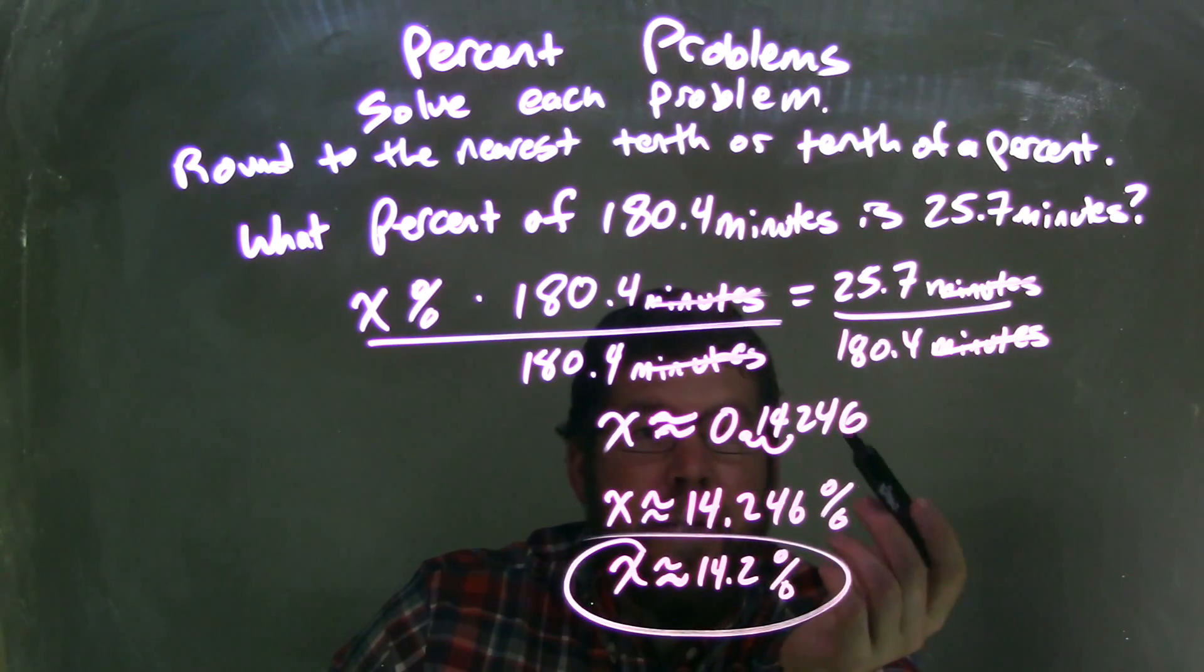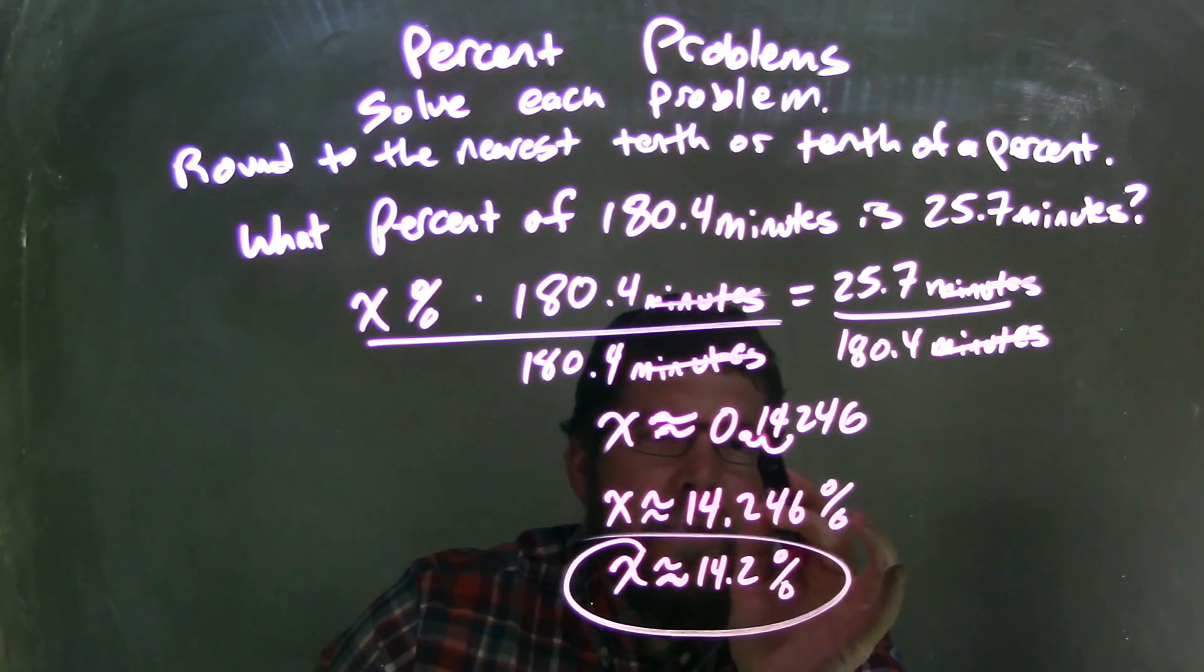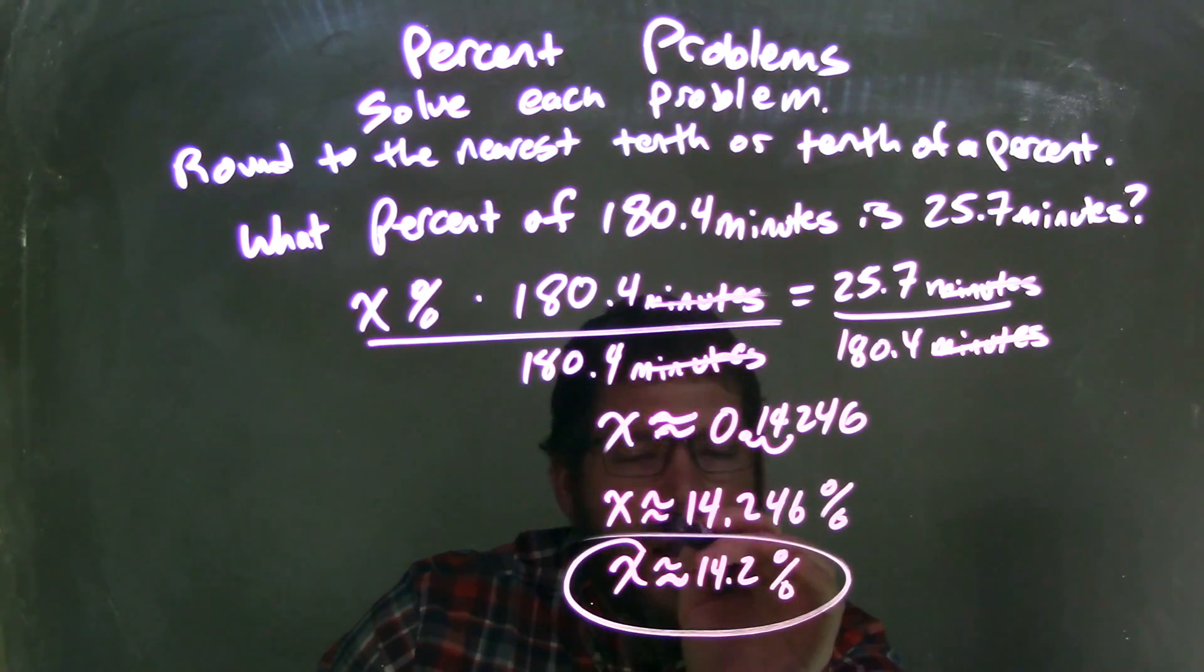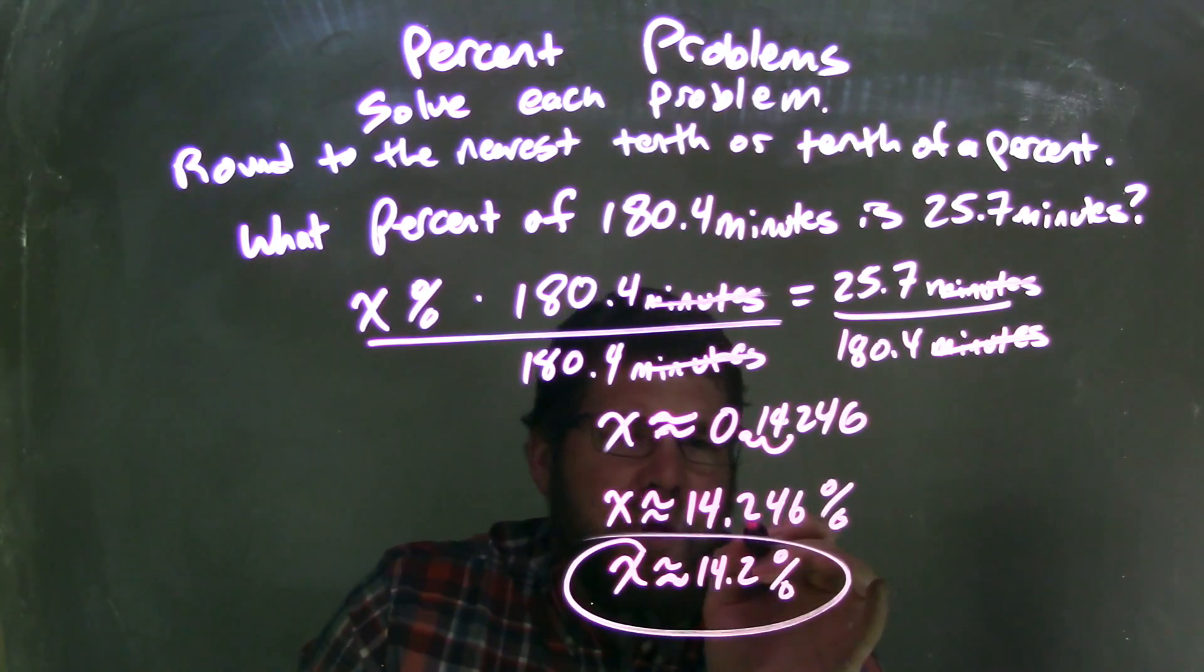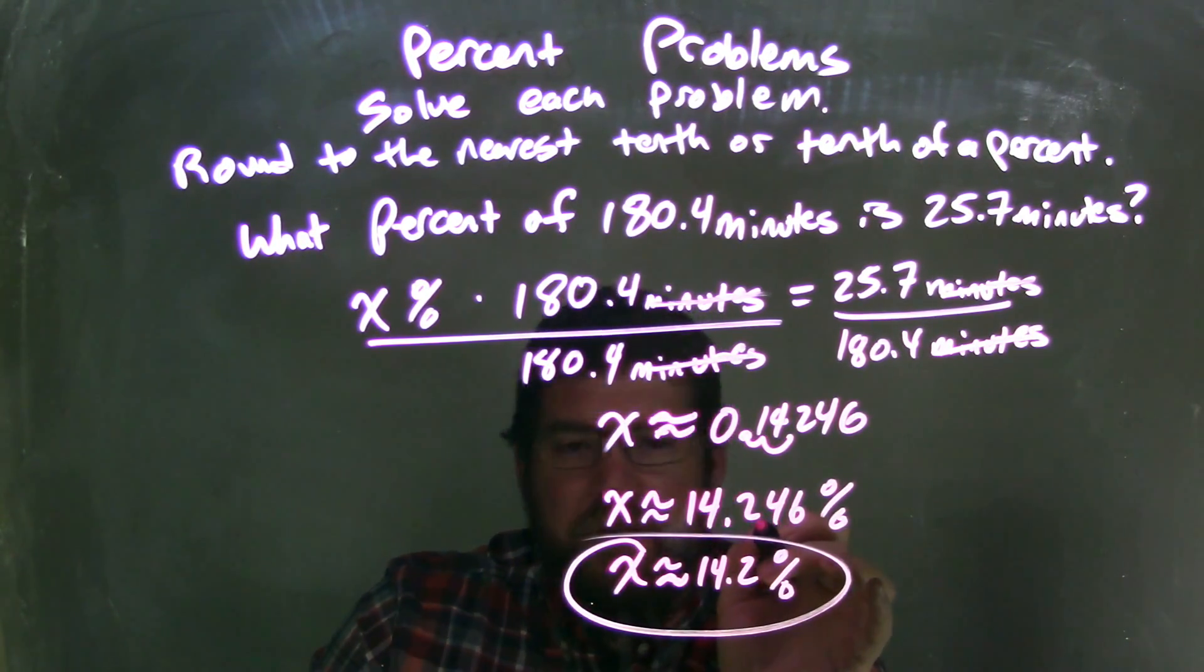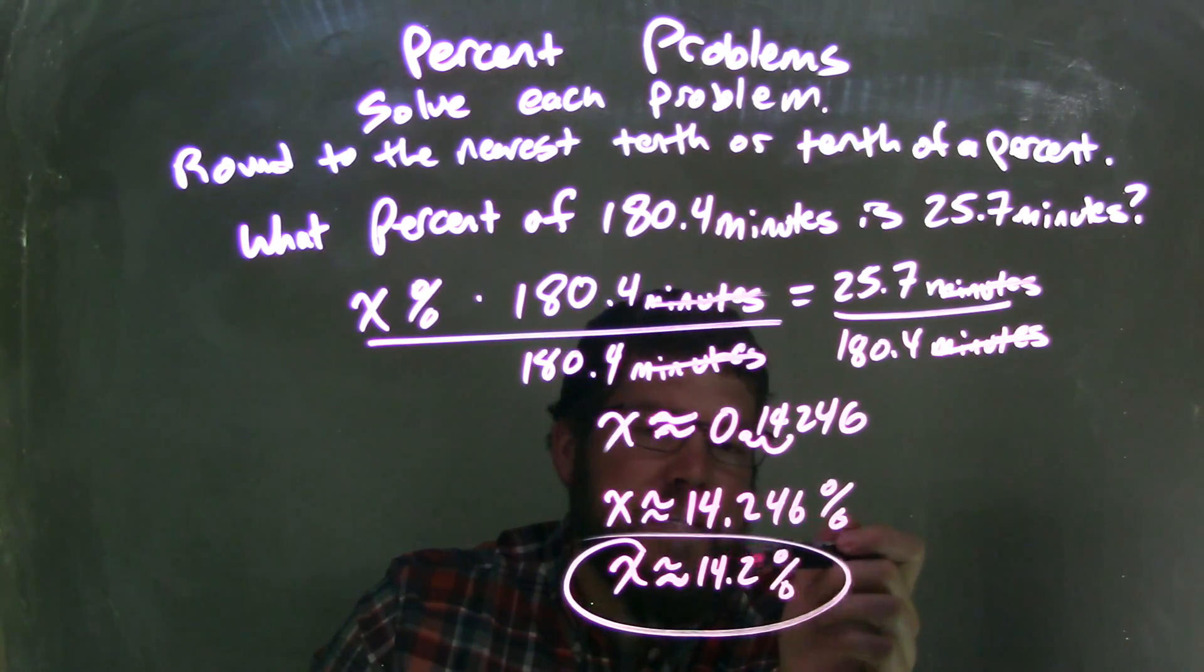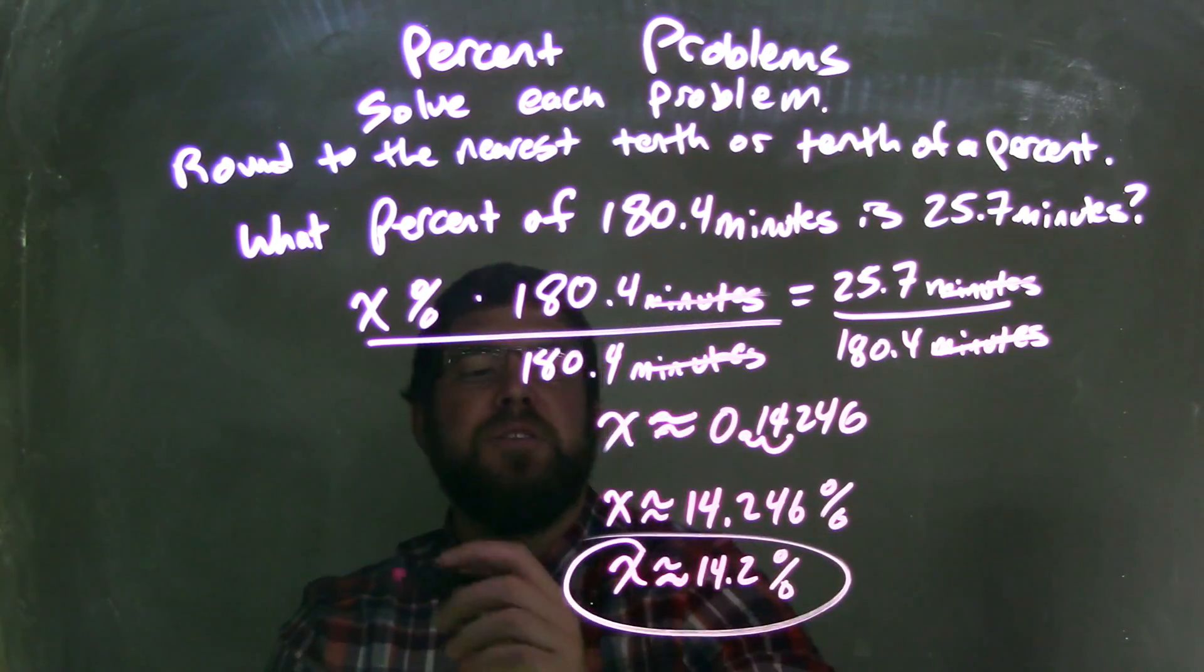I then need to convert that to be a percent. So I move the decimal place two units to the right, leaving me with 14.246% approximately. This was an approximate decimal as well. Then I had to round that, looking at the two and the four. The four causes the two to stay where it is. And so my final answer being x is approximately equal to 14.2%, answers the question.